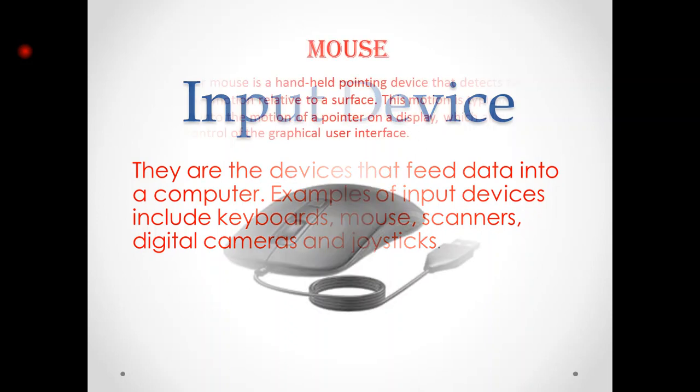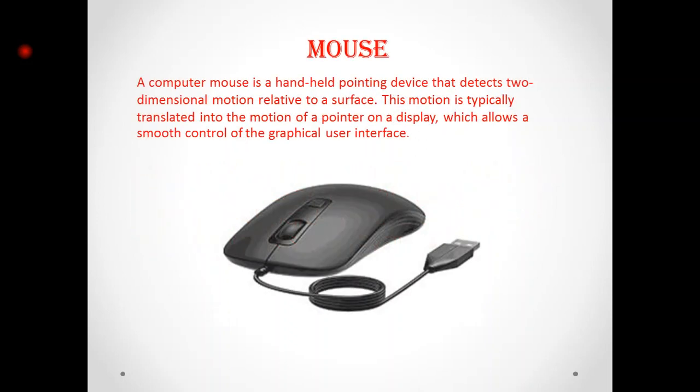Now we start from mouse. What is a mouse? A mouse is a pointing device which is used to point to programs. It detects two-dimensional motion relative to a surface.